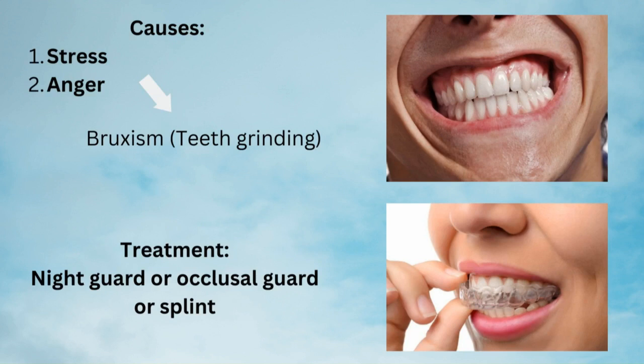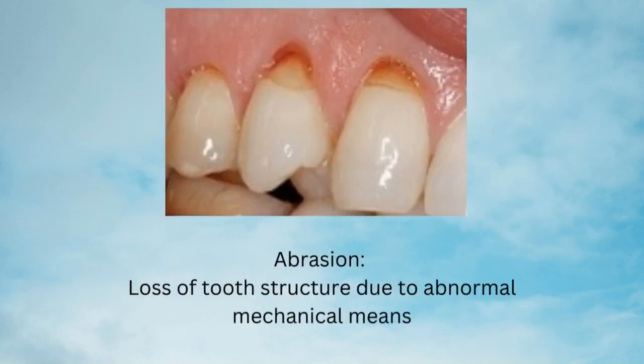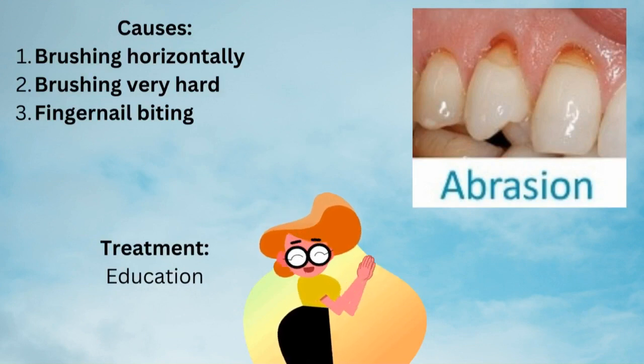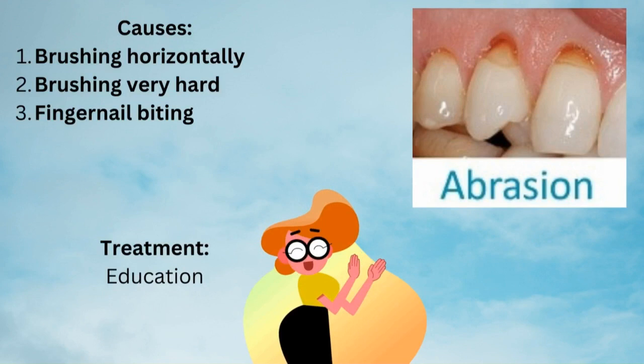Next is abrasion, which is defined as loss of tooth structure due to abnormal mechanical means. The causes behind it are brushing horizontally, brushing very hard on your teeth, or fingernail biting. The treatment is to educate the patient not to brush too hard and to use a very soft toothbrush.